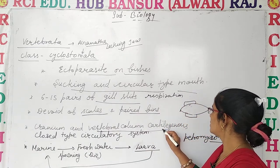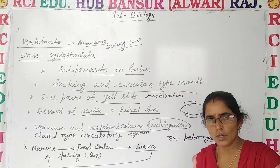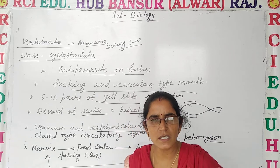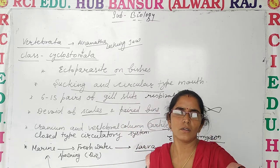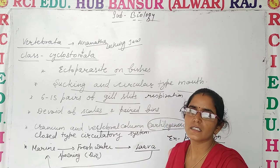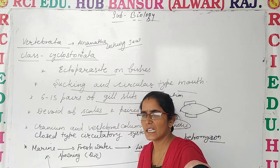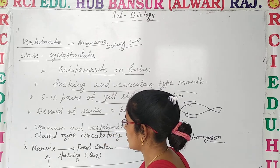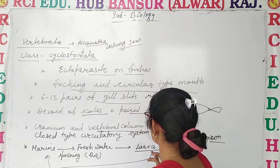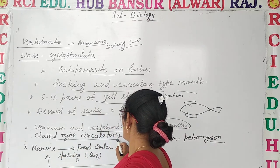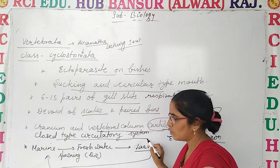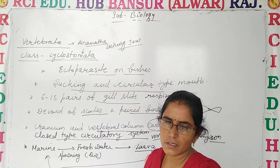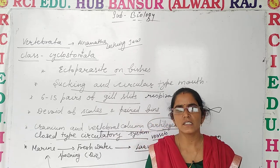The cranium and vertebral column consist of cartilage. We have studied two types — Pisces and Osteichthyes — but in Cyclostomata, being a more primitive group, the skeleton system consists of cartilage. The circulatory system is closed type, meaning blood flows through vessels.